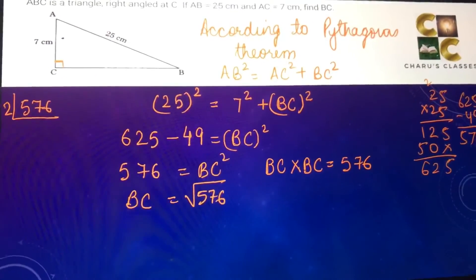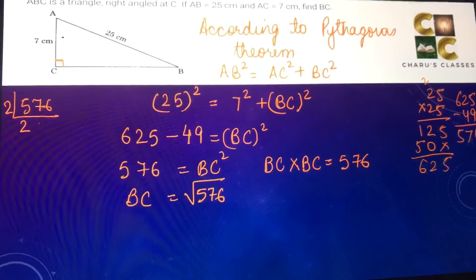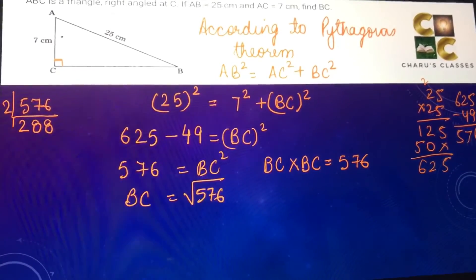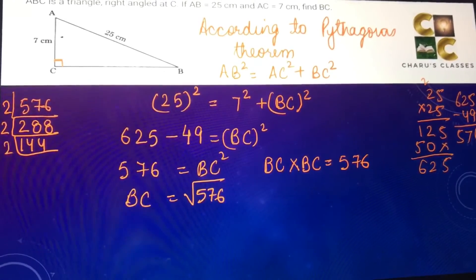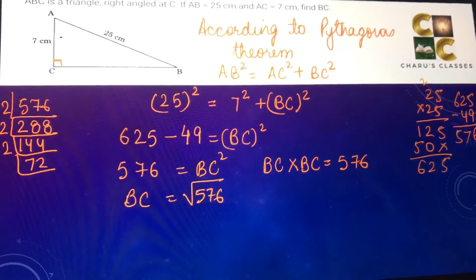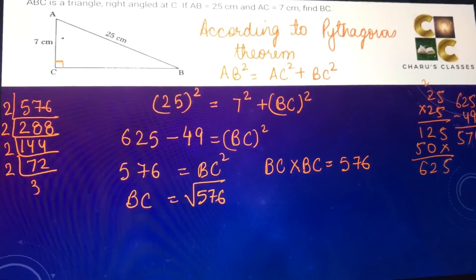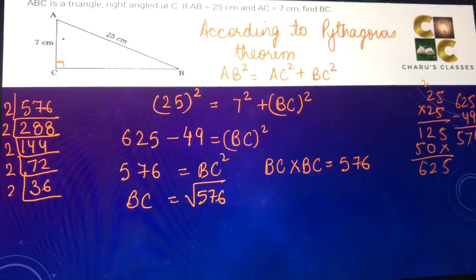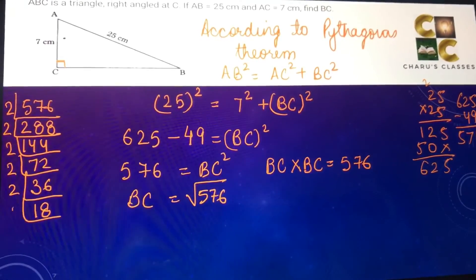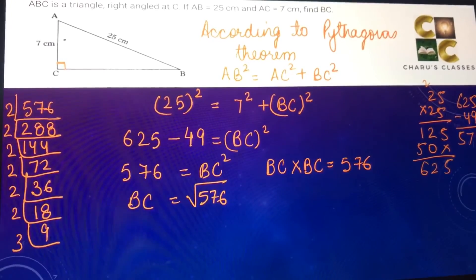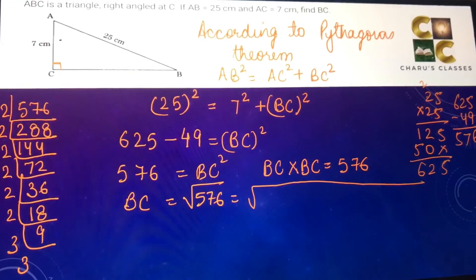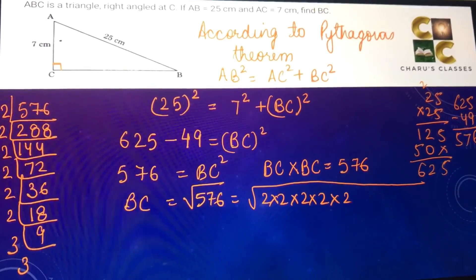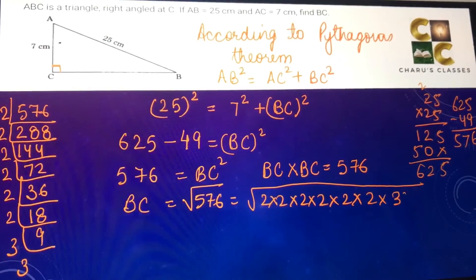We will begin with 2 because it is an even number. Dividing repeatedly: 576 → 288 → 144 → 72 → 36 → 18 → 9 → 3 → 3. So 576 equals 2 × 2 × 2 × 2 × 2 × 2 × 3 × 3 under the square root.